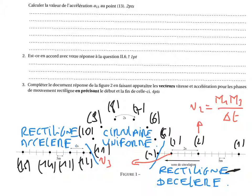V2 s'écrit avec la distance parcourue entre les points encadrants. On nous dit qu'entre deux traits consécutifs, nous avons 5 mètres. Donc il suffit de compter les traits entre le point 1 et le point 3 et les multiplier par 5 mètres. Cela fait 10 carreaux, soit 10 fois 5, c'est-à-dire 50 mètres de distance parcourue.